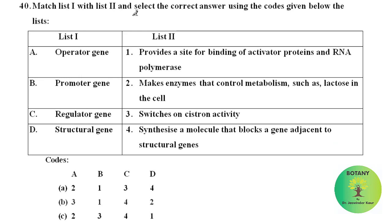Match list one with list two and select the correct answer: the operator gene switches on cistron activity; the promoter gene provides a site for binding of activator proteins and RNA polymerase; the regulator gene synthesizes a molecule that blocks a gene adjacent to structural genes; and structural genes make enzymes that control metabolism, such as lactose in the cell. The correct option is option B.